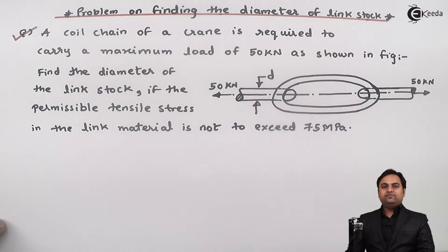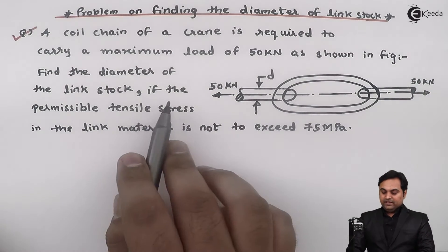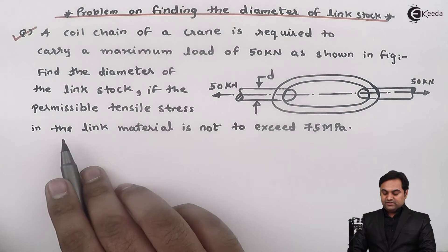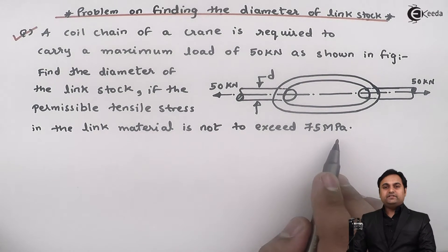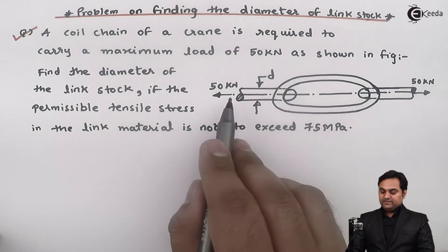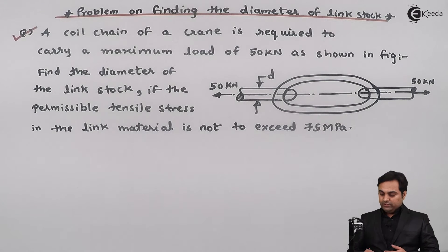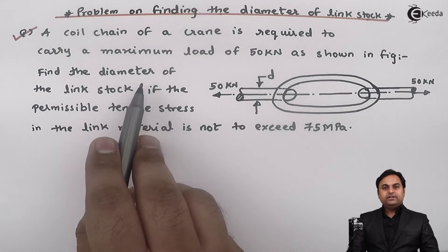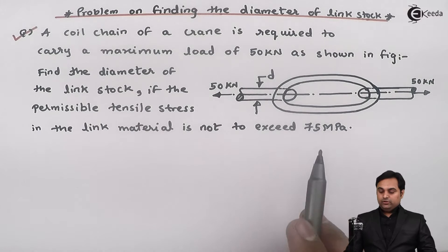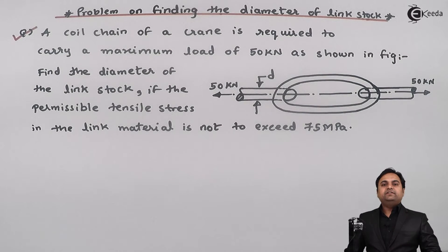If the permissible tensile stress in the link material is not to exceed 75 MPa, since this chain is subjected to tensile load, we have to find the diameter considering the tensile stress.